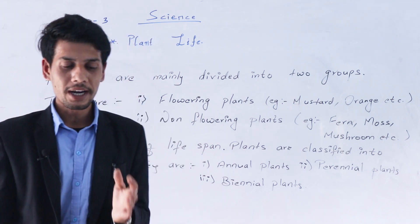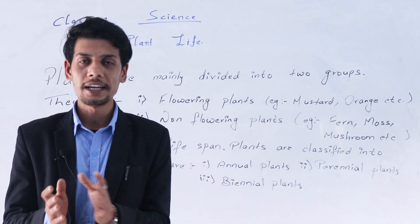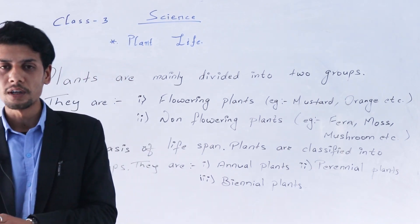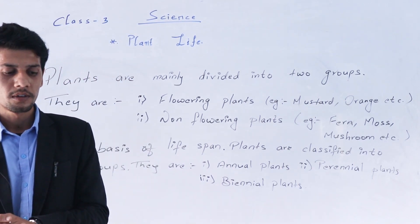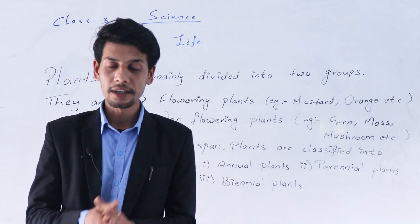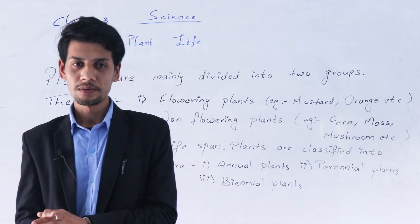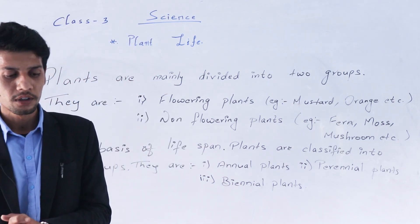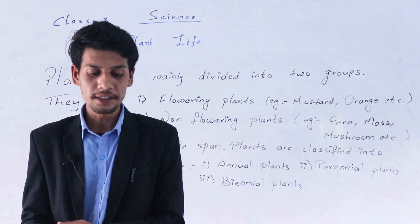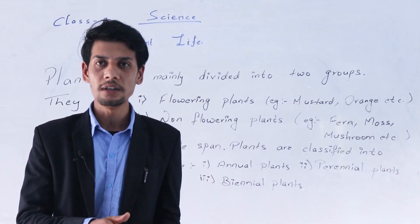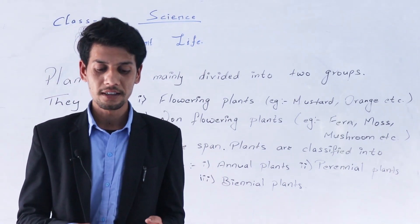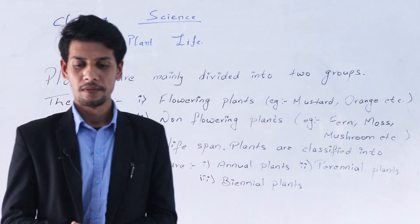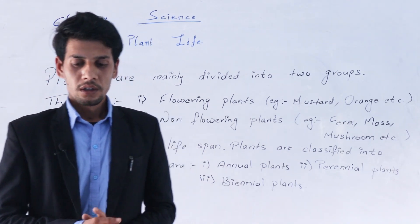What are annual plants? Write any three examples. Examples of annual plants: cauliflower, rice, cucumber, maize, etc. These are the annual plants.